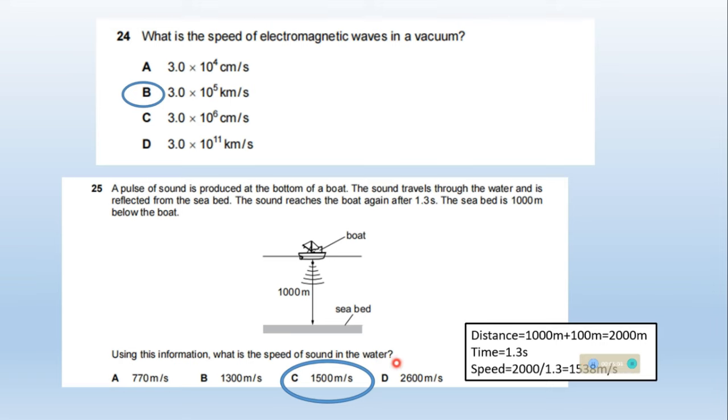Using this information, what is the speed of sound in the water? Speed equals distance divided by time. The total distance is 2000 meters, and time is 1.3 seconds. Speed equals 1538 meters per second, approximately 1500 meters per second. Option C is correct.